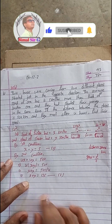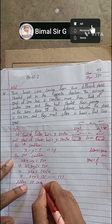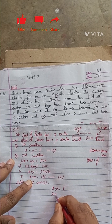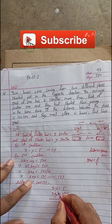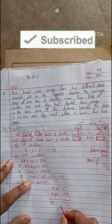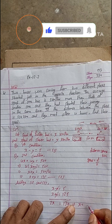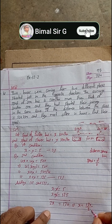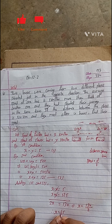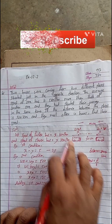Now we solve by adding equation 1 and equation 2. x minus y equals 5, and x plus y equals 125. Adding both equations, the y terms cancel: 2x equals 130, therefore x equals 65. The speed of the faster bus is 65 kilometers per hour.